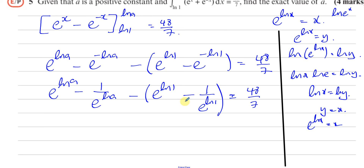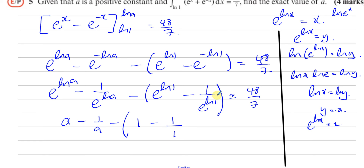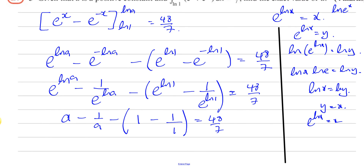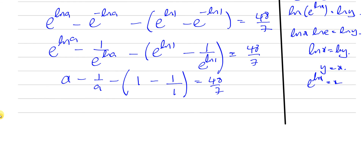Applying this property: e to the power of ln(a) is a, and 1 over e to the power of ln(a) is 1 over a. And e to the power of ln(1) is 1, so 1 over e to the power of ln(1) is 1 over 1. So we end up with a minus 1 over a, minus the bracket 1 minus 1, equals 48 over 7. That gives us a minus 1 over a equals 48 over 7.